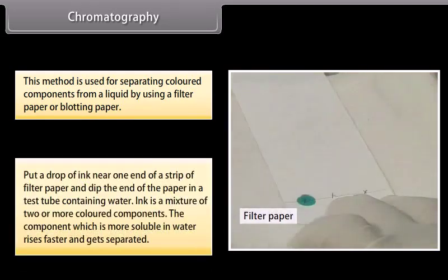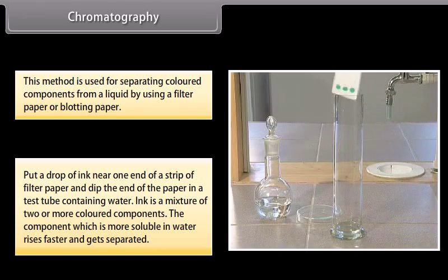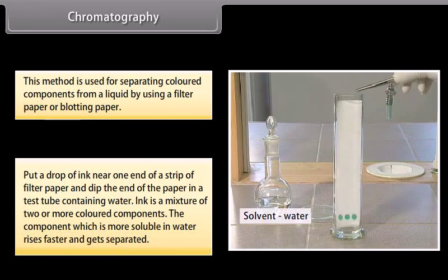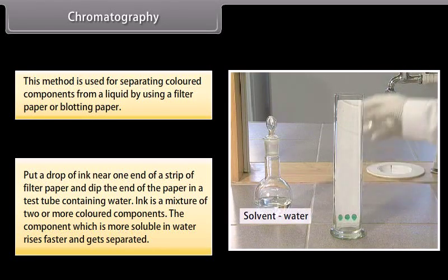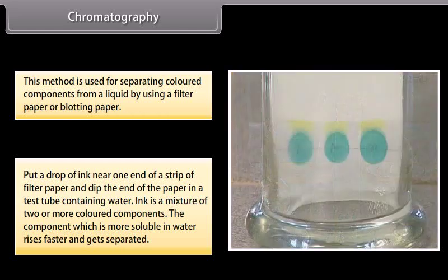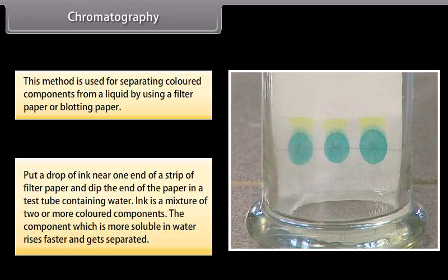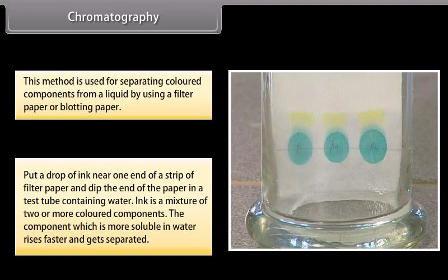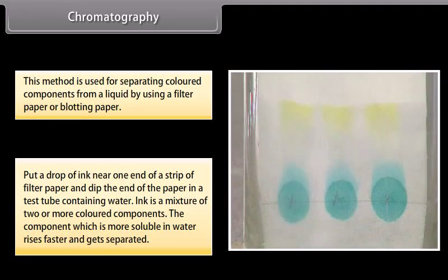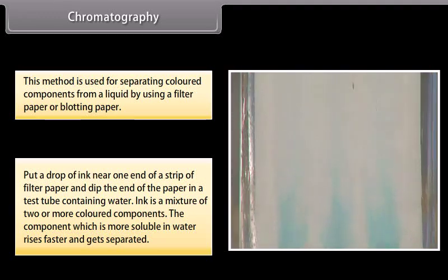Put a drop of ink near one end of a strip of filter paper and dip the end of the paper in a test tube containing water. Ink is a mixture of two or more colored components. The component which is more soluble in water rises faster and gets separated.